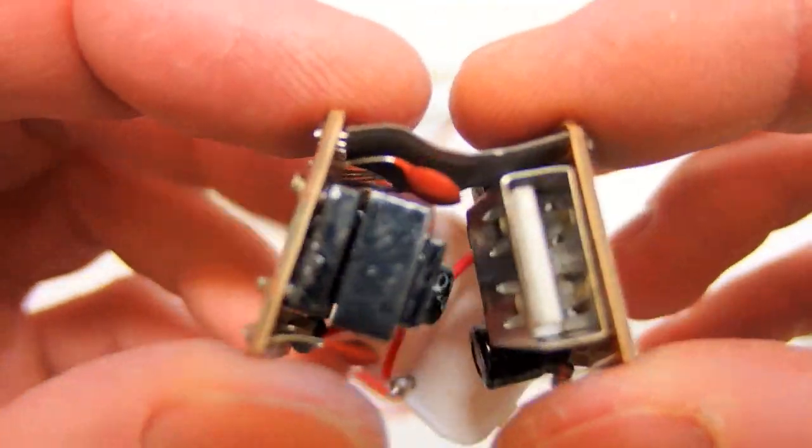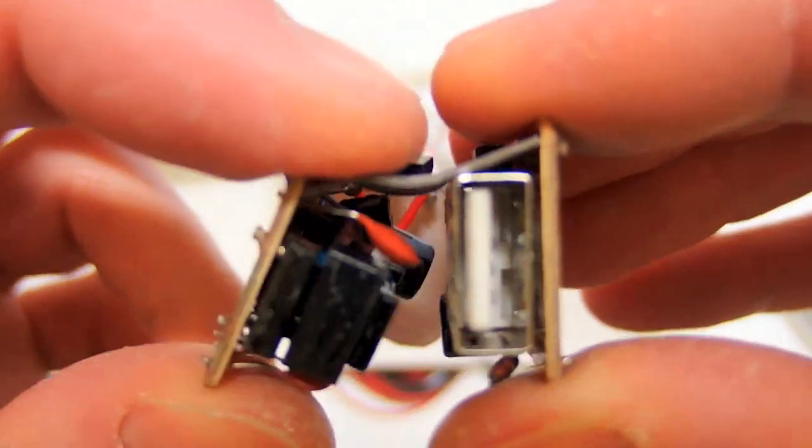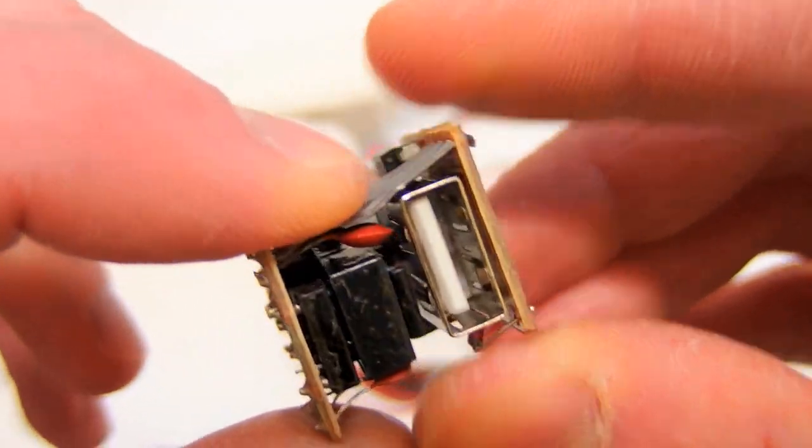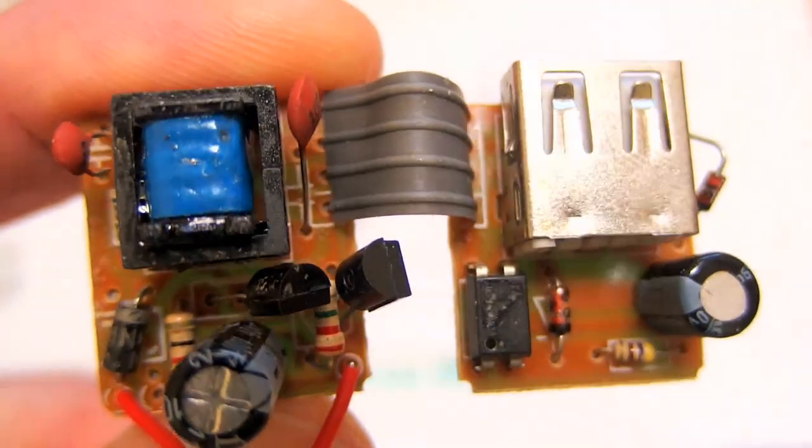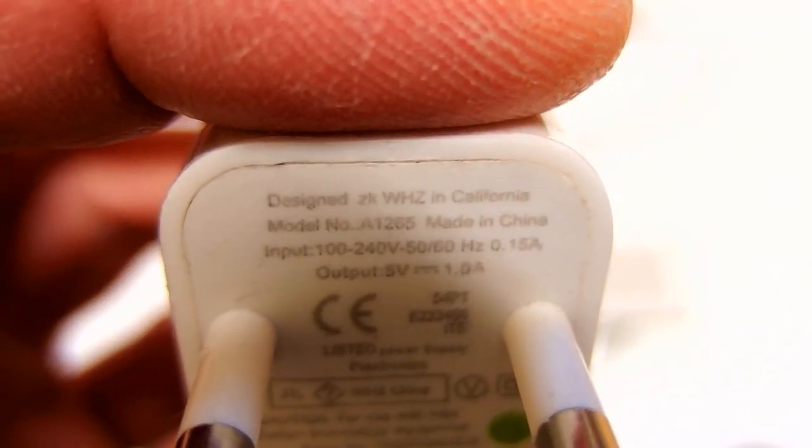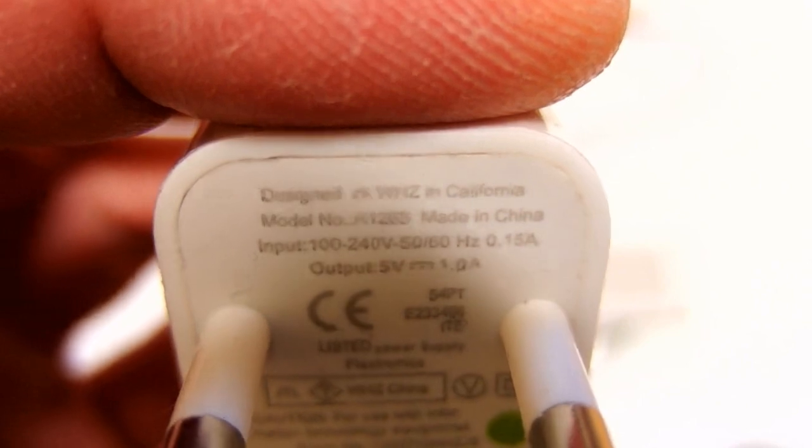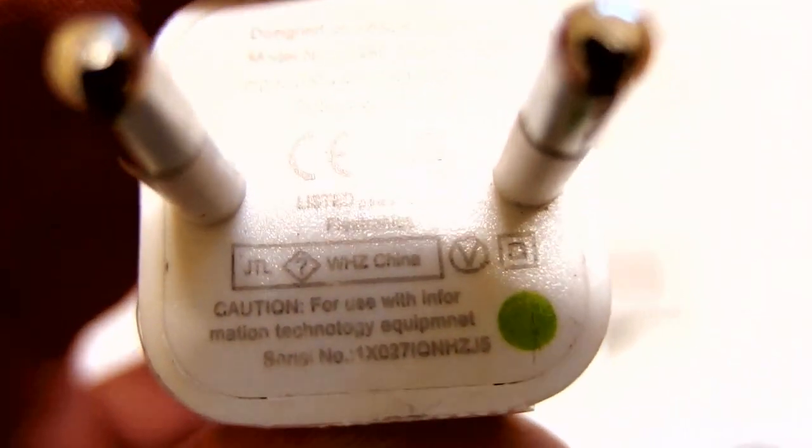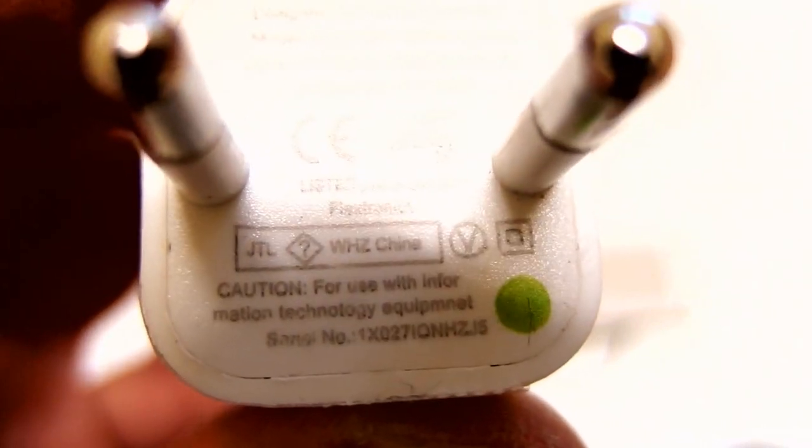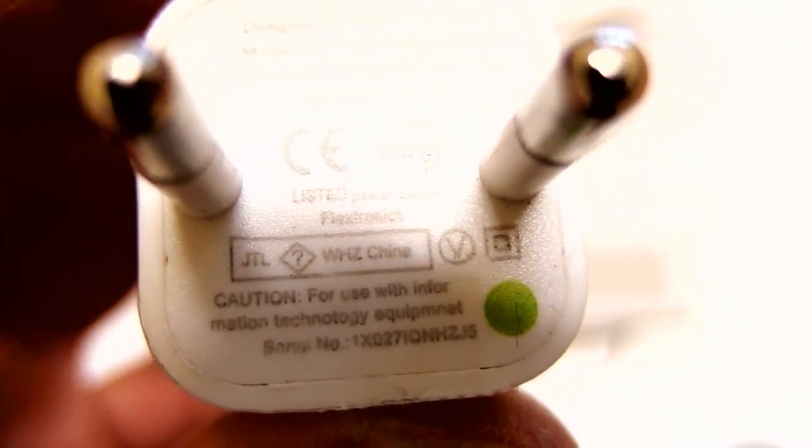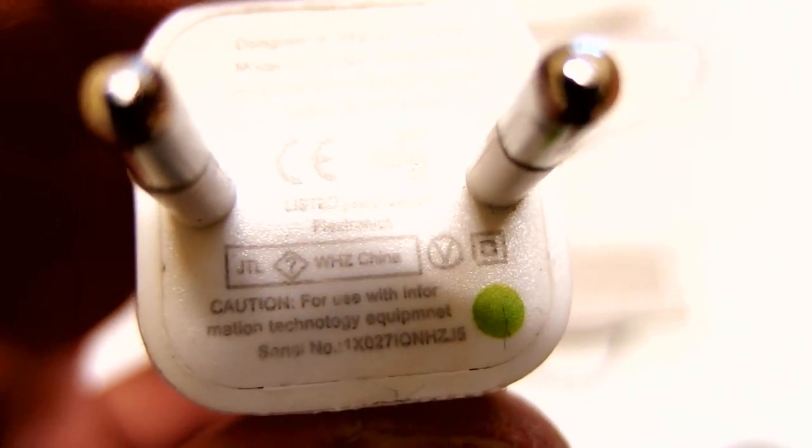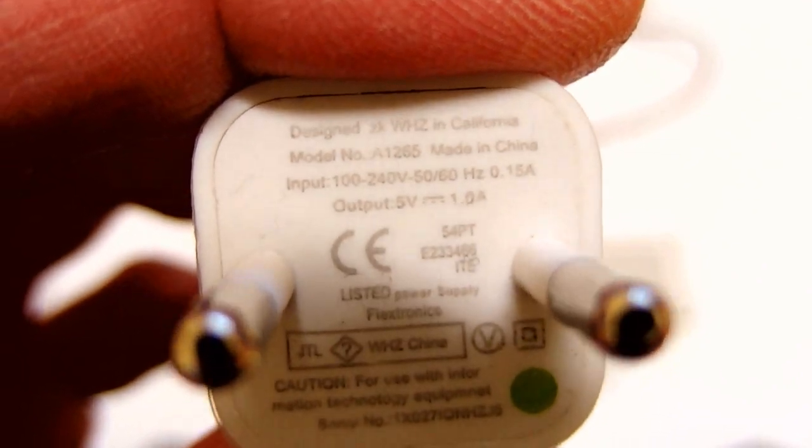This cable is with a very thin isolation. And it also contains primary side and it's touching the USB. And would you touch the output? You'll be the judge. Designed ZKWHZ in California. I have no idea what they mean. Made in China, of course. Caution for use with information technology equipment. Not equipment. It's equipment. And it says one amp, so let's load it with one amp. And this is the time for explosive experiment.